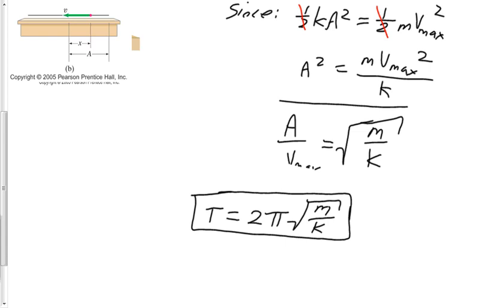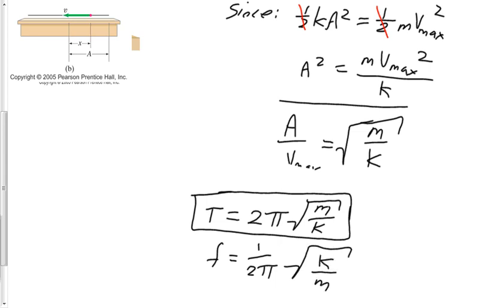Since period T equals 1/frequency, I can express this in terms of frequency: frequency equals 1 over 2π times the square root of k/m. Notice that period and frequency are both independent of amplitude — amplitude does not appear in these equations. The time it takes to go back and forth depends on the mass attached to the spring and the spring constant k, which makes intuitive sense: a larger mass takes longer to oscillate.